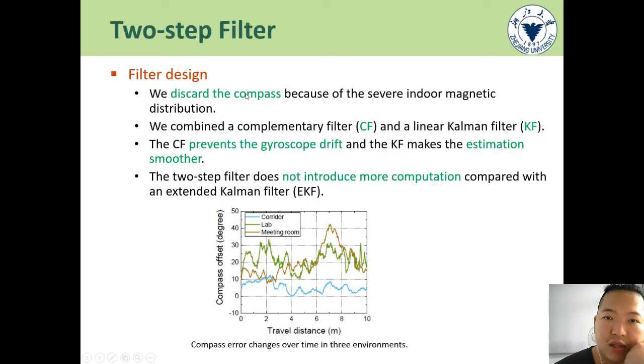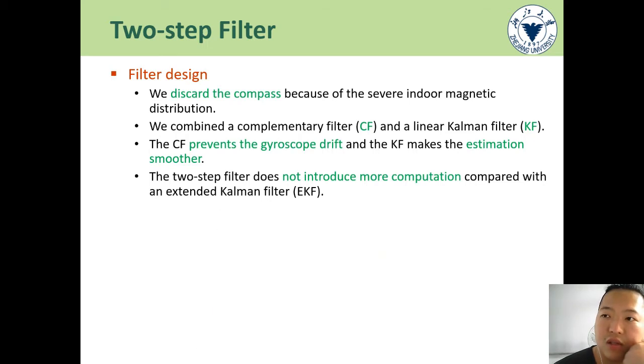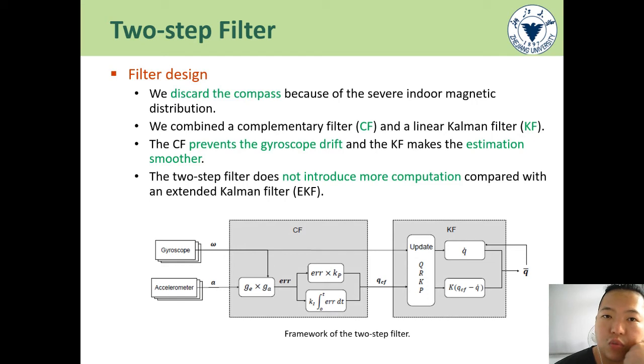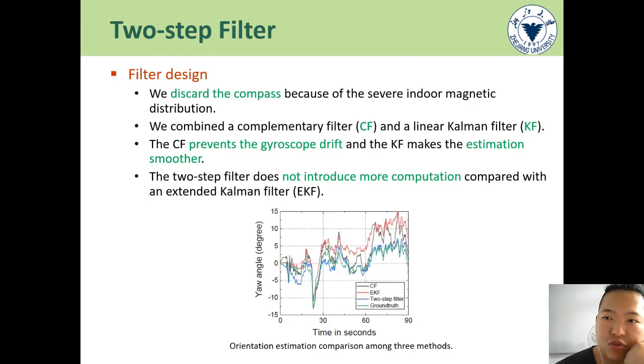Compared with classical IMU fusion designs, our two-step filter discards the compass readings since indoor magnetic distribution causes instability. We combine a complementary filter and a linear Kalman filter, as the figure shows. The two-step filter will generate smooth estimation while decreasing the drift, as shown in this figure.